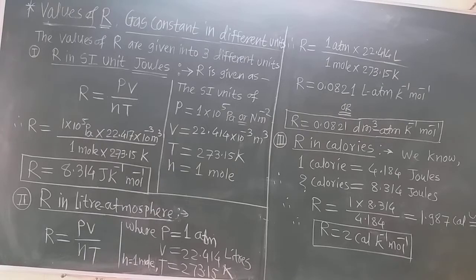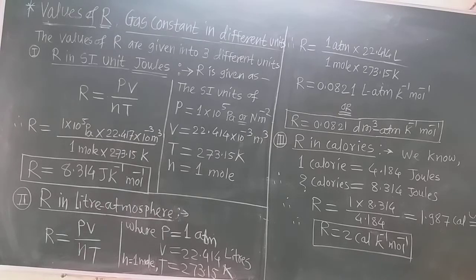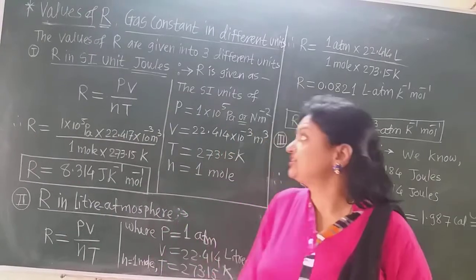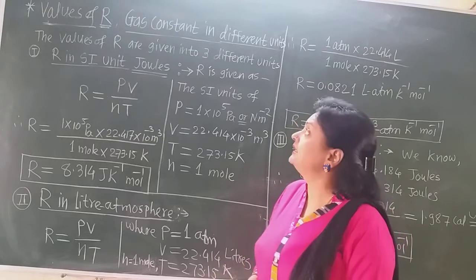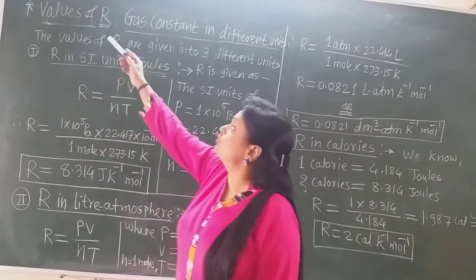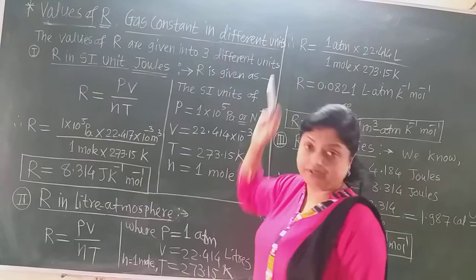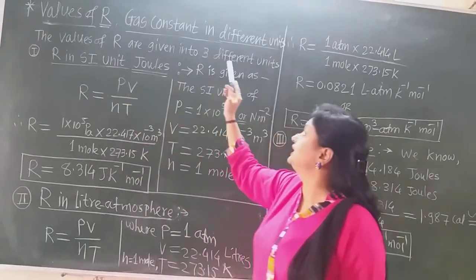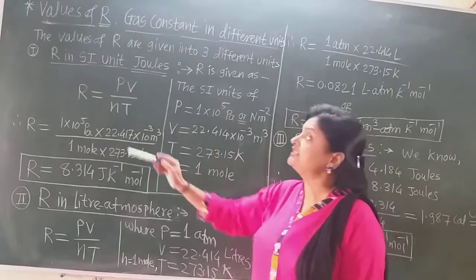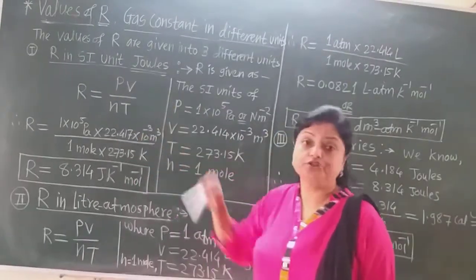The units of the gas constant depend upon the units of pressure, volume, and temperature. Let us learn the first way of expressing the gas constant — the values of R in different units. The values of R gas constant are given in three different units. First is R in SI unit, that is joules.